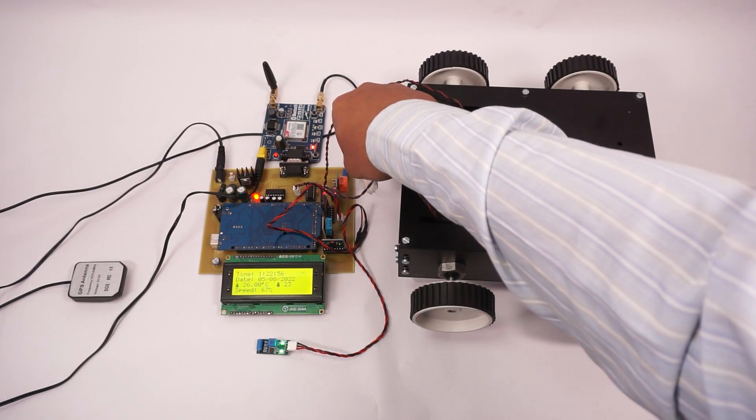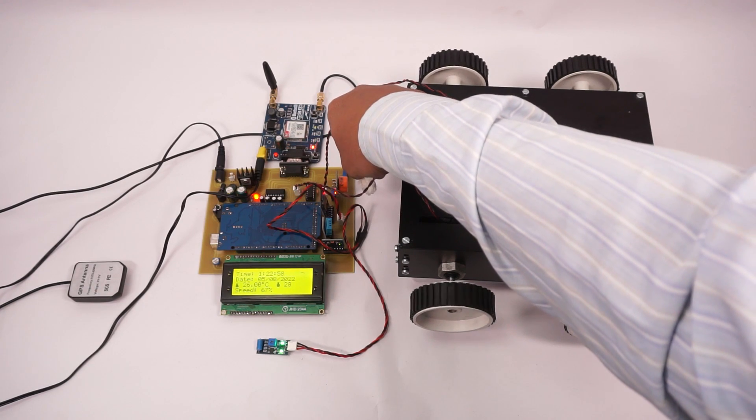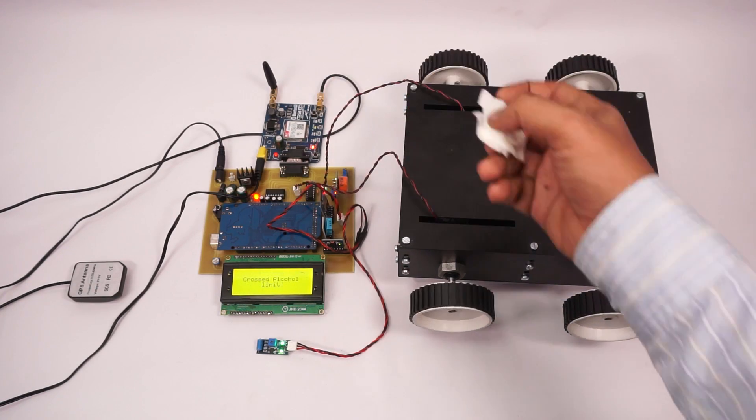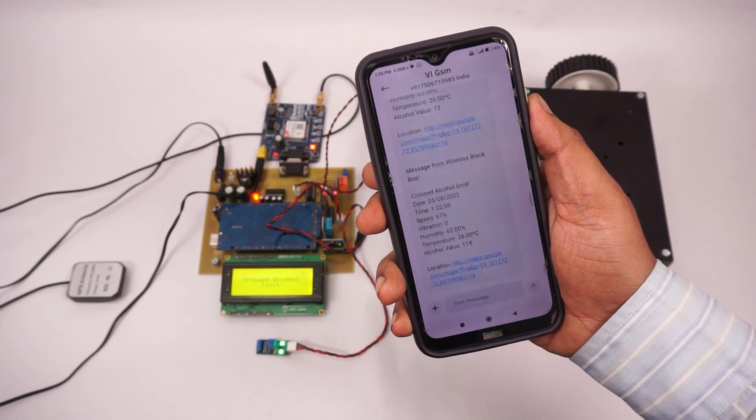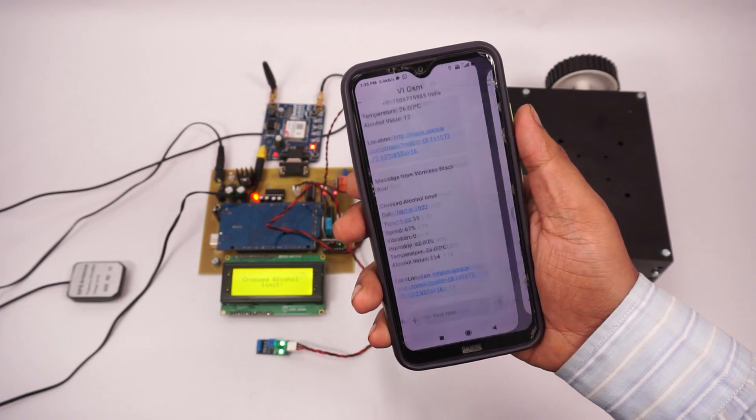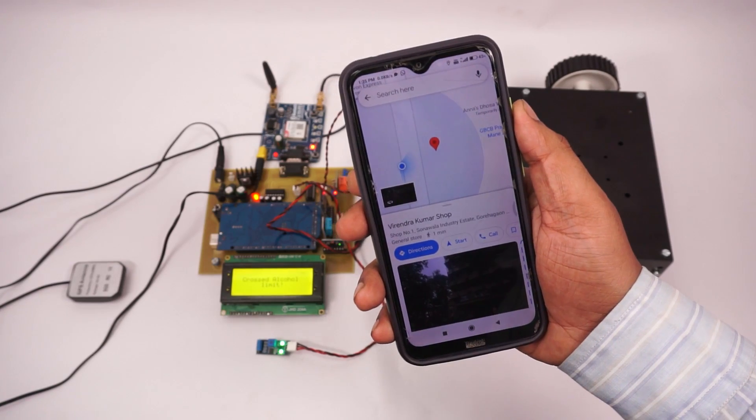Now let's simulate alcohol. Suppose alcohol was detected in the vehicle and we have got another SMS message about the event along with the GPS coordinate.